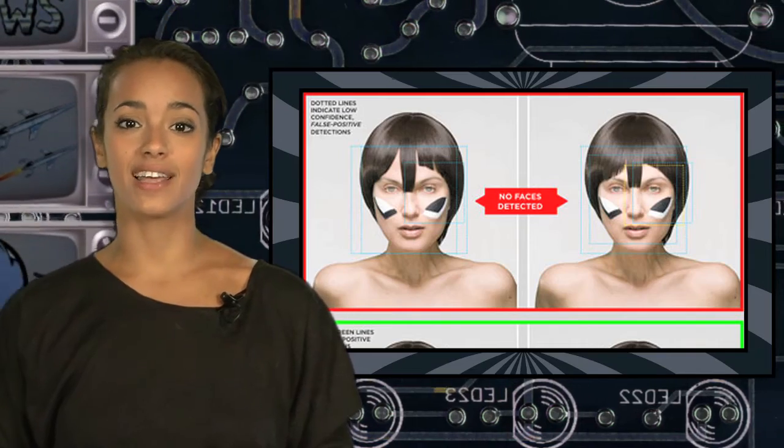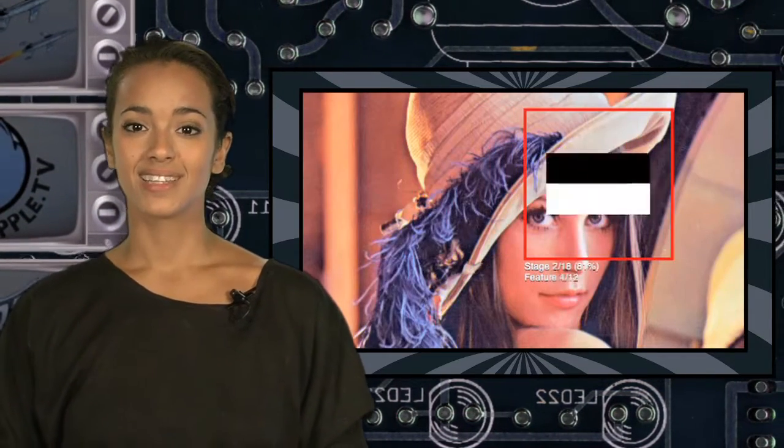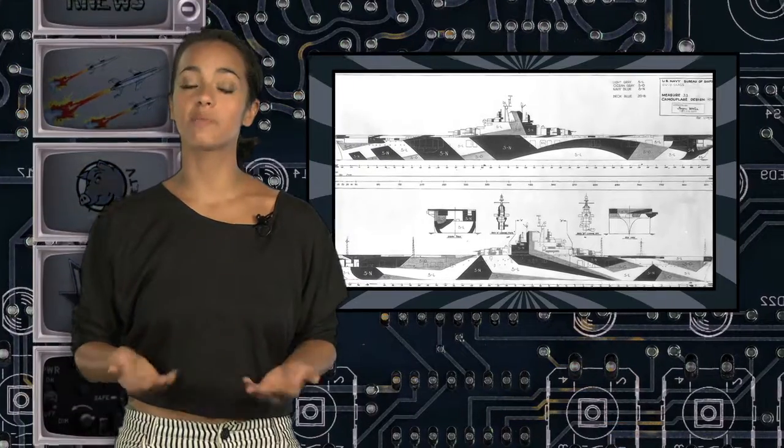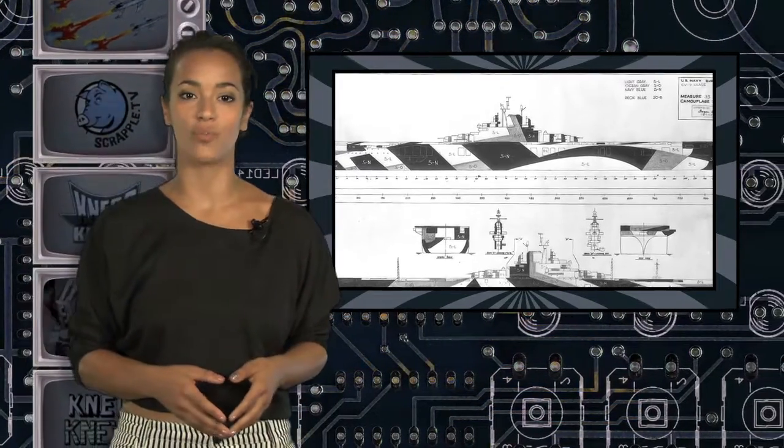He created a guide for hair styling and makeup application that might keep a camera from recognizing the person. This technique is called CV Dazzle. The name comes from a type of camouflage used during World War II to make it hard to detect the size and shape of warships.